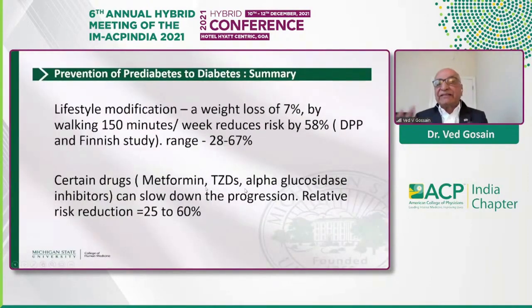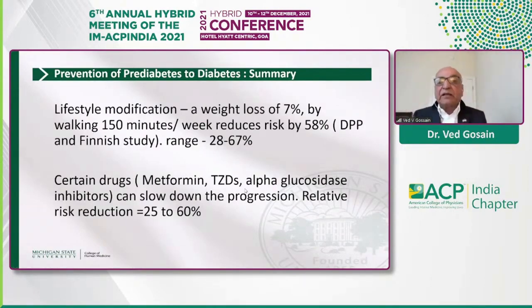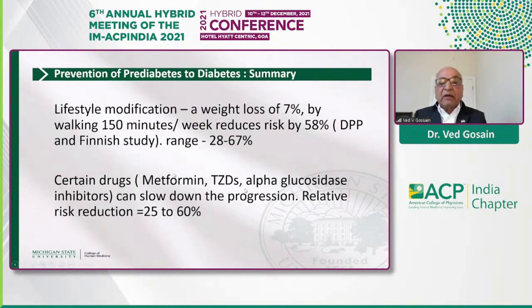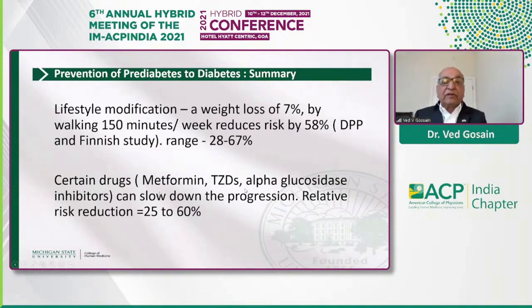To summarize, lifestyle modification — basically a 7% weight loss by walking approximately 150 minutes per week — reduced the risk by about 58%, with a range of 28% to 67%. Although we haven't talked about them in detail, many drugs including thiazolidinediones, metformin, and alpha-glucosidase inhibitors can also reduce risk by about 25% to 60%.